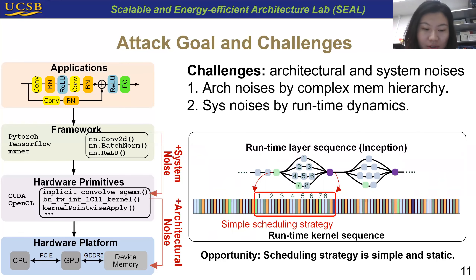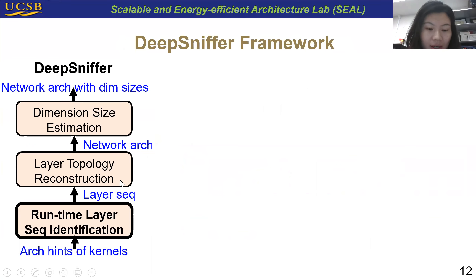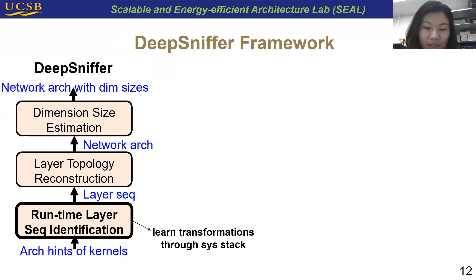Based on these observations, we propose DeepSniper for model extraction based on learning architecture hints. DeepSniper first identifies the runtime layer sequence based on architecture hints, then reconstructs the layer topologies, and in the third step conducts dimension size estimation. We take the runtime layer sequence identification as a fundamental step, which learns the transformations through the system stack.